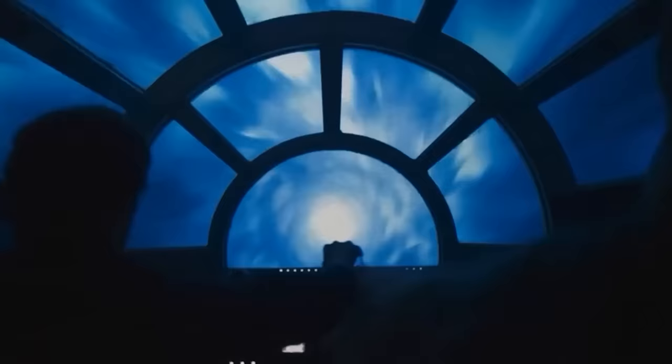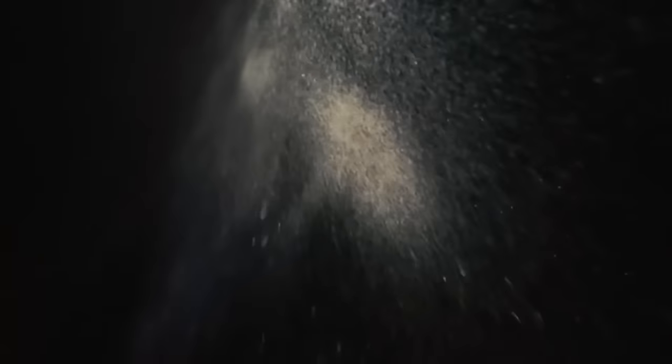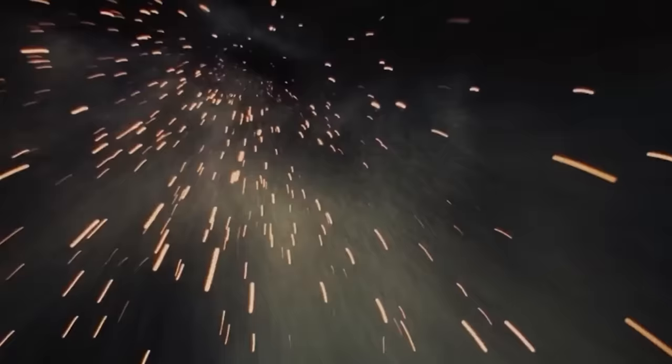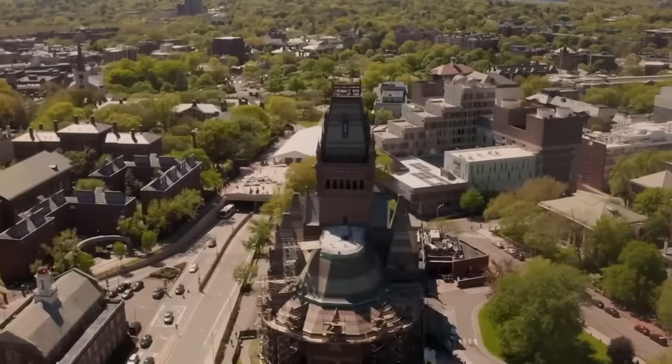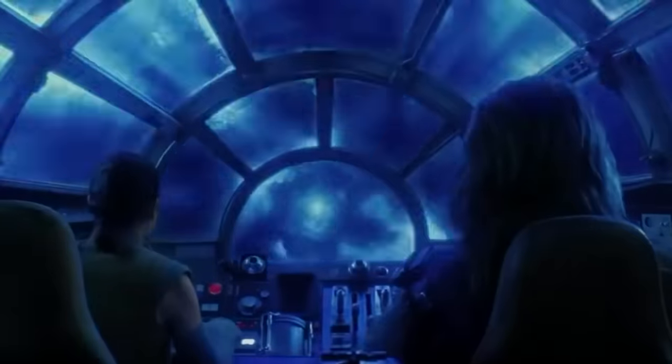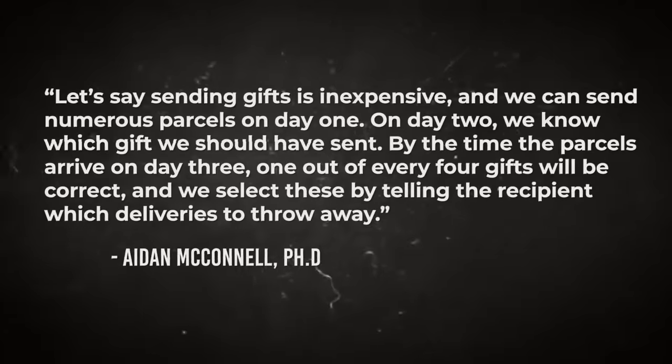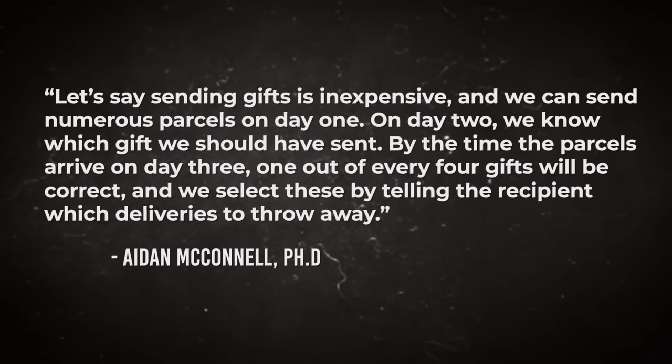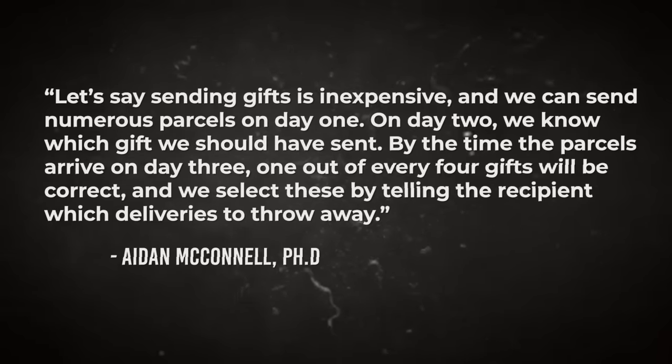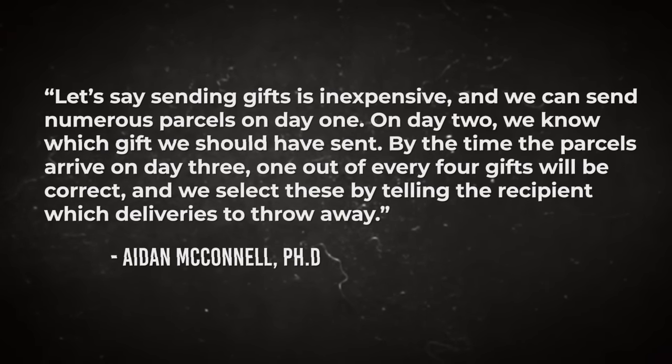Fortunately, in their simulations, they at least know when they have failed, which can still allow the researcher to rework the system to effectively achieve backward time travel and get the result that they wanted. To achieve this seemingly impossible goal, they propose using a filter that will allow their theoretical experimenter to send several solutions and then simply filter out the 75% that they didn't want. One of the commentators on the study's results and a co-author of the study, Aidan McConnell, PhD, who carried out this research during his master's degree at the Cavendish Laboratory in Cambridge, wrote, let's say sending gifts is inexpensive and we can send numerous parcels on day one. On day two, we know which gift we should have sent. By the time the parcels arrive on day three, one out of every four gifts will be correct and we select these by telling the recipient which deliveries to throw away.